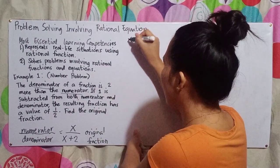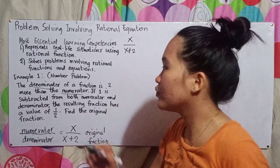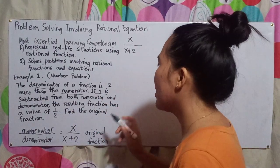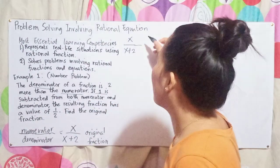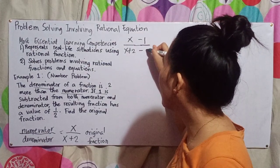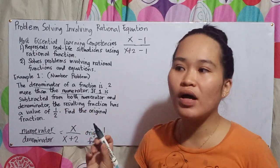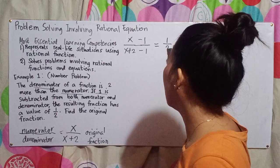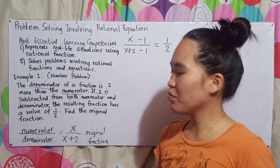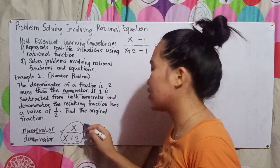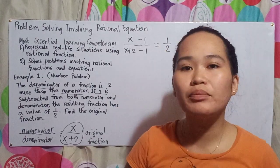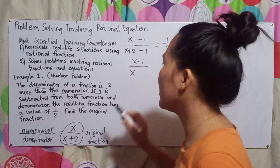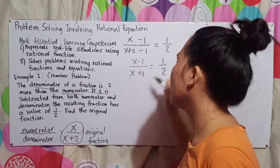The original fraction is x over x plus 2. In the second sentence: 'If 1 is subtracted from both numerator and denominator' — so the numerator becomes x minus 1, and the denominator becomes x plus 2 minus 1. The resulting fraction equals one-half. So: x minus 1 over x plus 2 minus 1 equals 1 half.